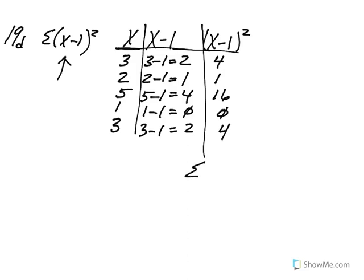So now to answer this problem. The sum of x minus 1 squared is simply the summation of these values here. I'm going to start from the bottom just because I liked grouping 10. So we have 4 plus 16, that's 20, 21, and then 4 more is 25.